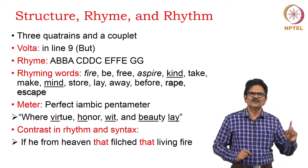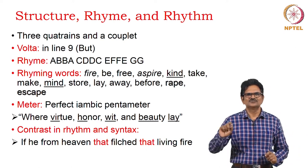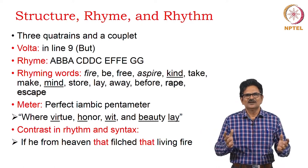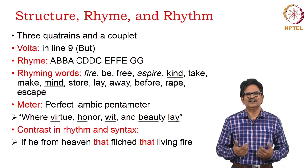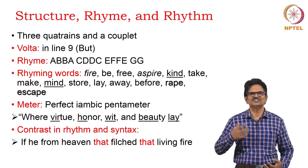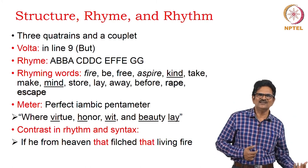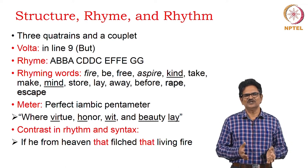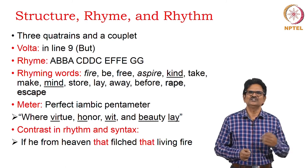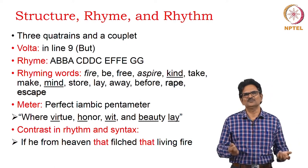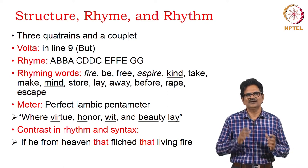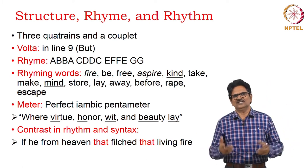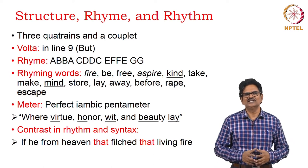Looking at those rhyming words — fire, aspire, kind, mind, rape, escape — we have interesting connotations. These words coming together make suggestions for us to understand the fire of aspiration, the imagination of aspiration, the mind having kindness. Regarding the word 'rape' used in this poem, we have to understand it is used differently, to refer to stealing or filching as the poet uses in the first line. Here, 'rape' does not refer to what we understand today — it refers to stealing something and escaping, which is the idea brought into this rhyme.